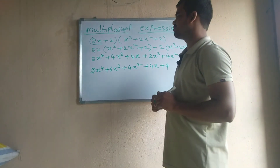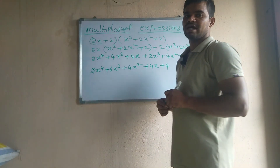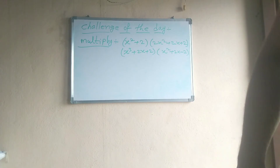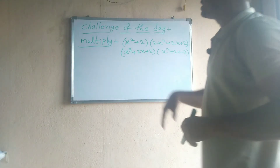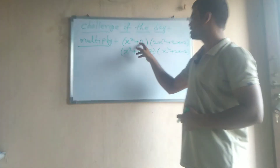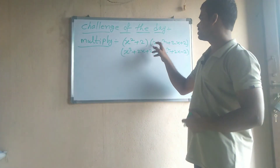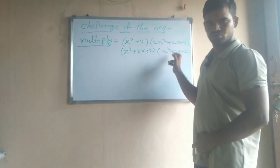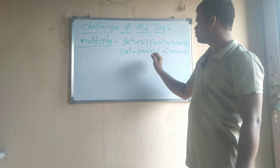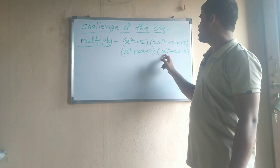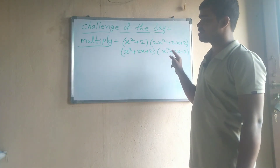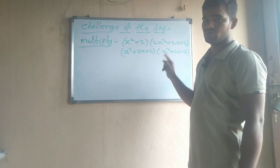In this way you need to multiply the given expressions. Now just multiply: (x squared + 2) with (2x squared + 2x + 2), and (x cubed + 2x + 2) with (x squared + 2x − 2). Comment your answer below the video.